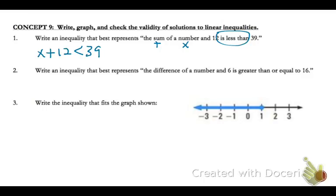That's the inequality for that statement. On number 2, we want to write an inequality that shows the difference. When you see difference, that means subtract. The difference of a number, which we'll call x, and 6, so x minus 6, is greater than or equal to. Now we have the arrow going the other way for greater than, and to show or equal to, we put a line underneath, 16.